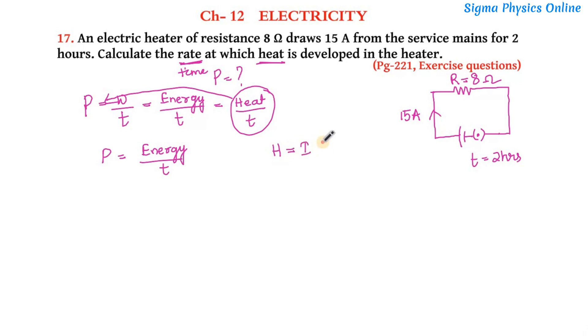From Joule's law of heating, substituting this value in the equation, it is I²Rt by t. The t gets cancelled, so it's simply I²R.